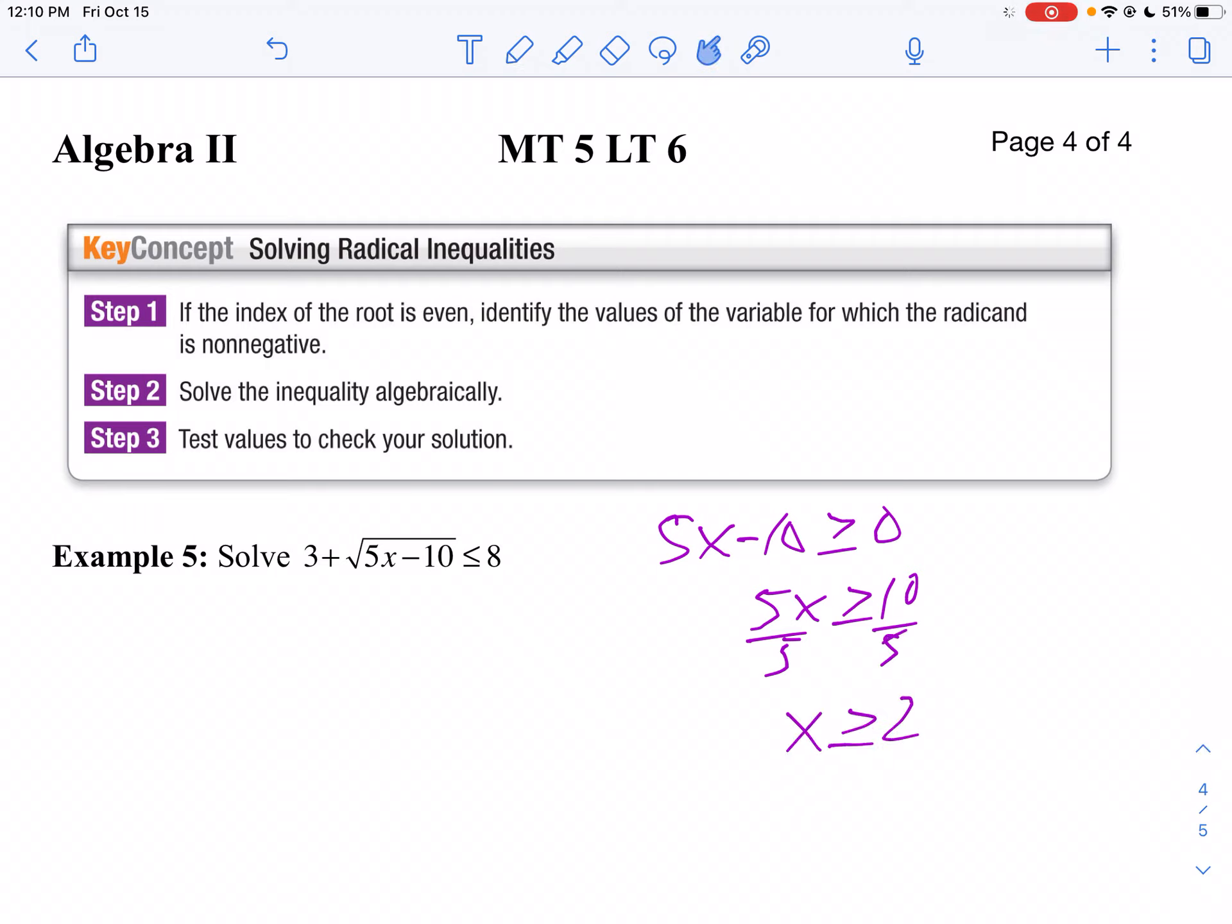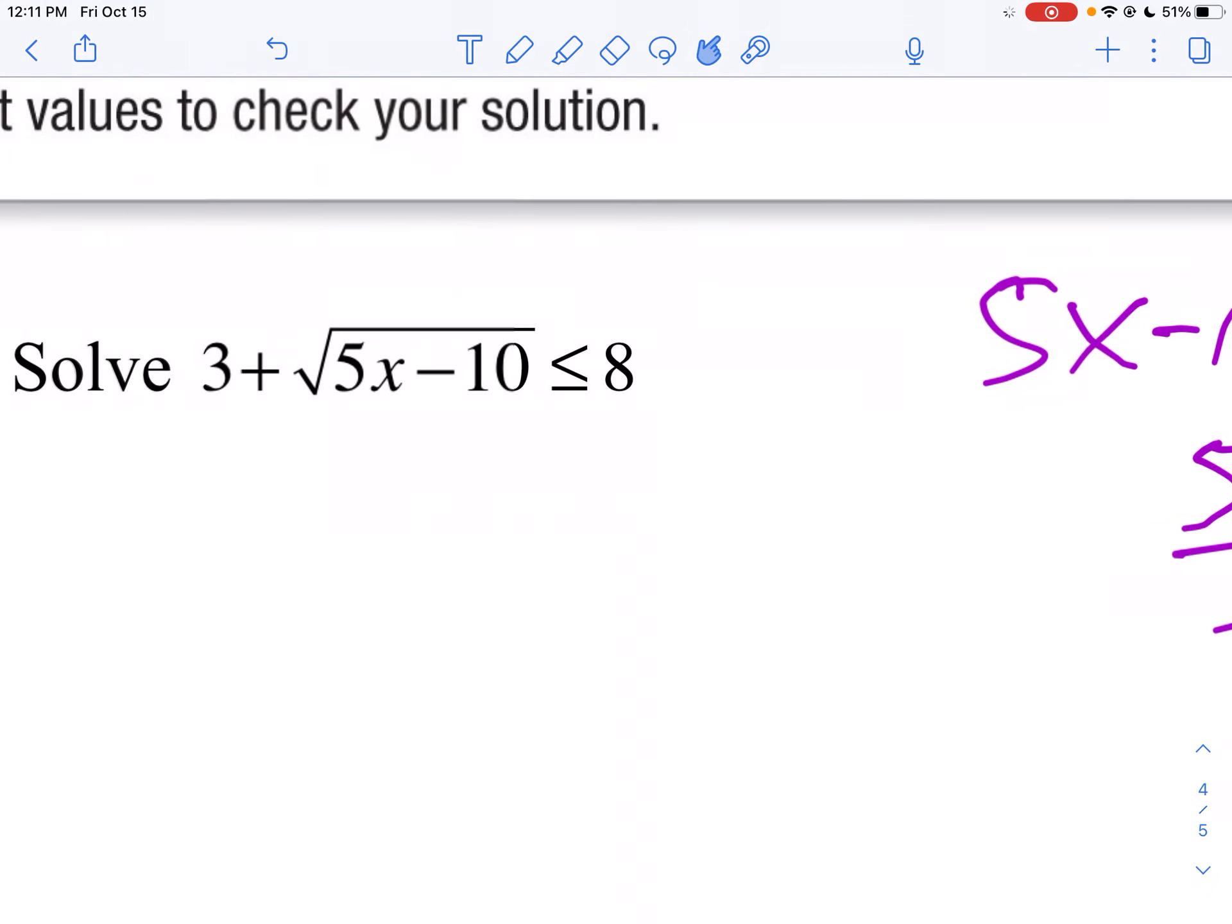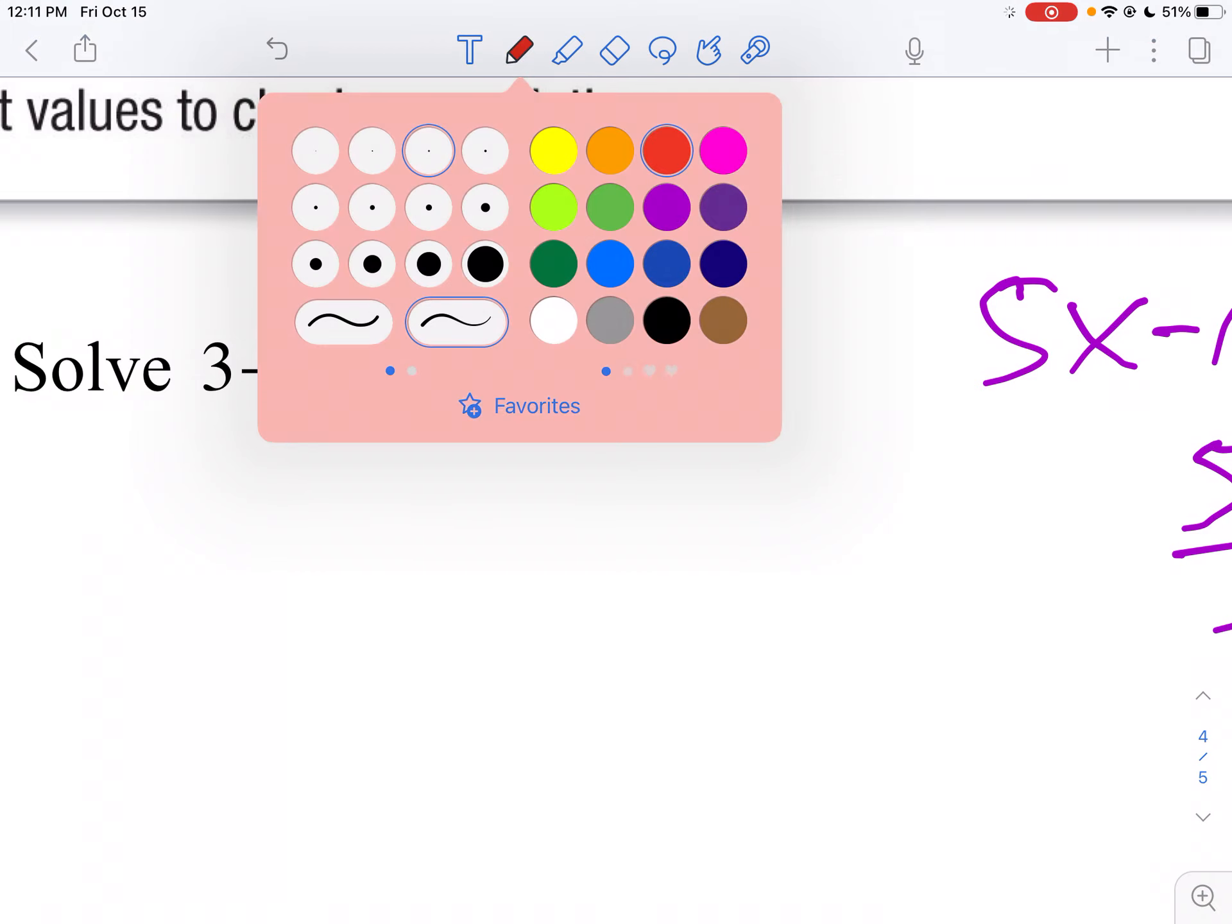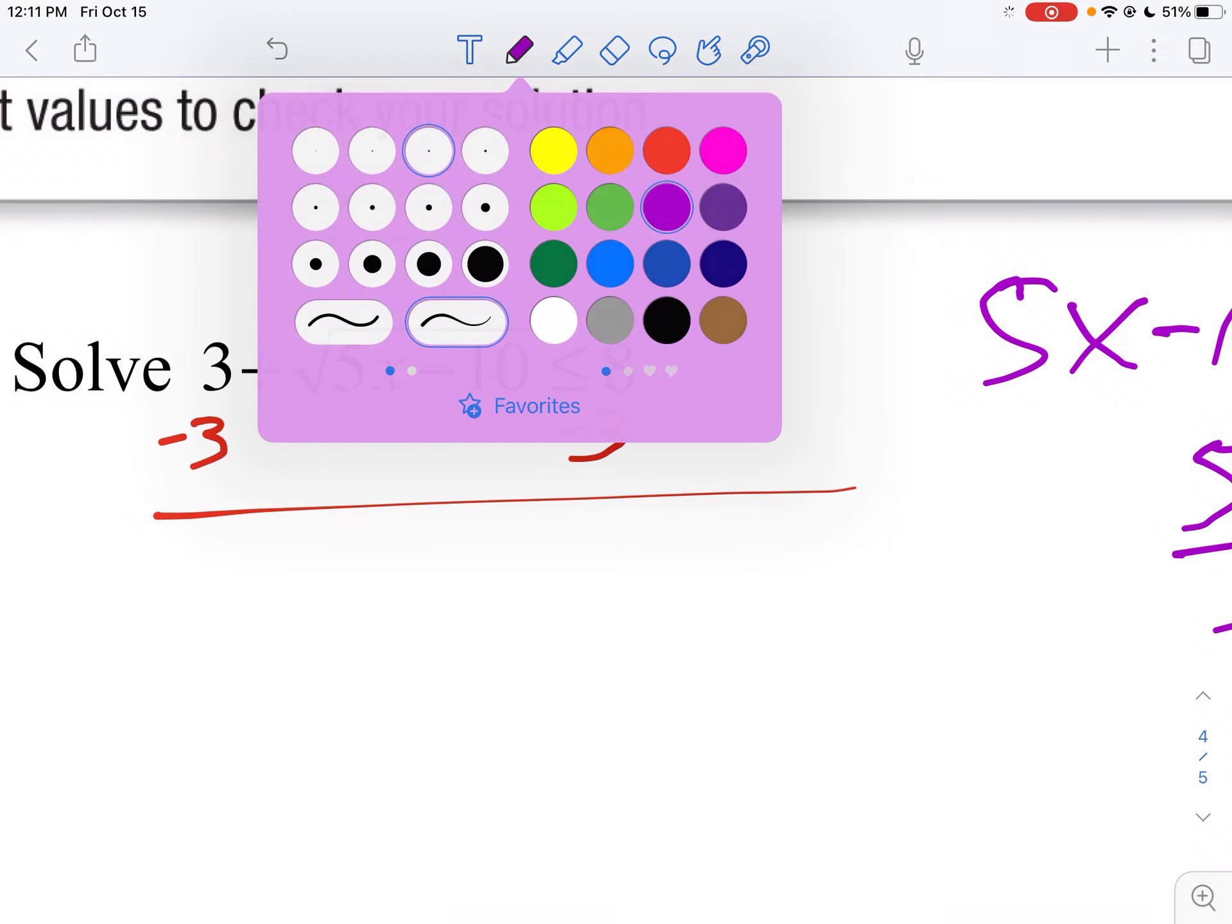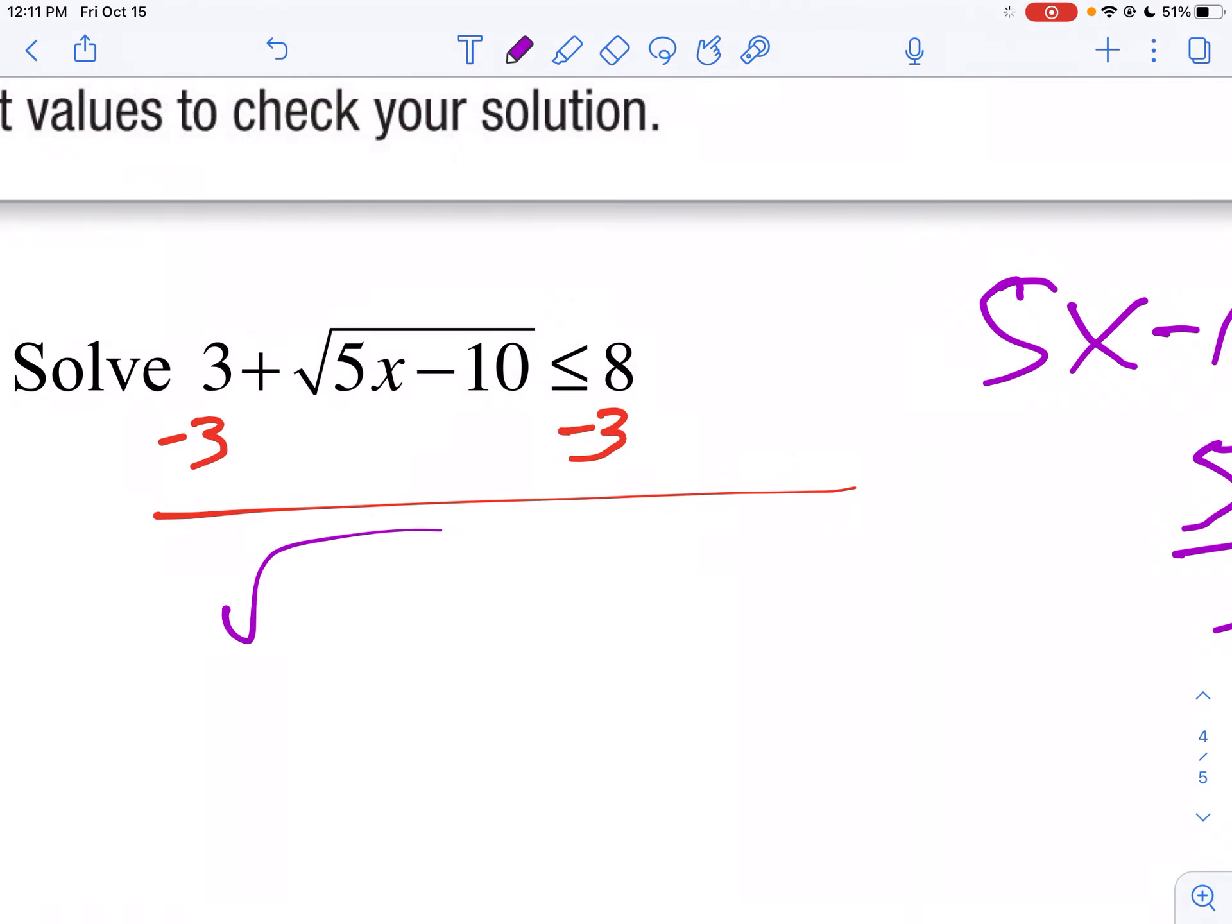Now let's solve the inequality normally. Subtract 3 from both sides. Then we get the square root of 5x minus 10 is less than 5. Let's square both sides.